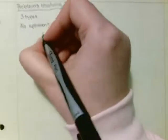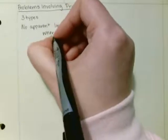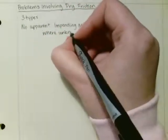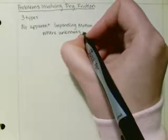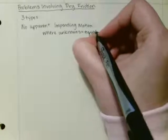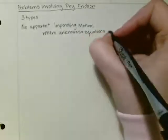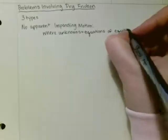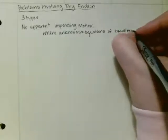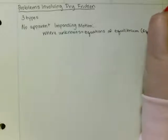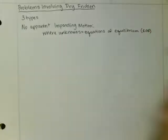What that means is where the unknowns for a problem are equal to the equations of equilibrium. And I'm going to just call this EOE from now on, a shorthand.